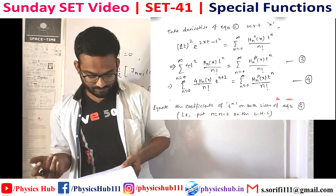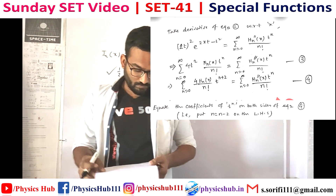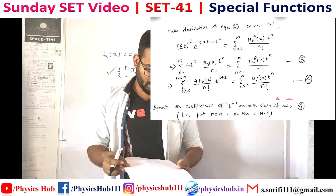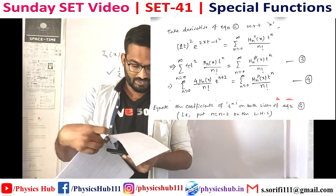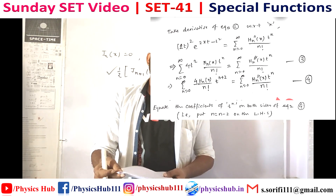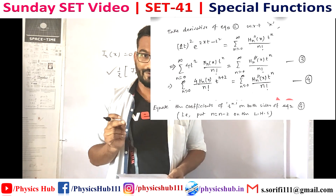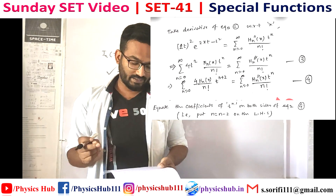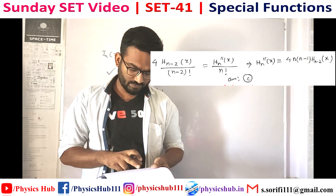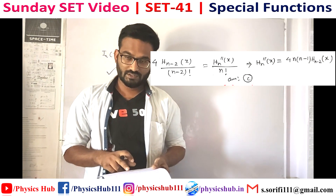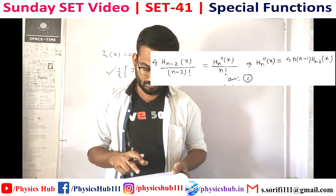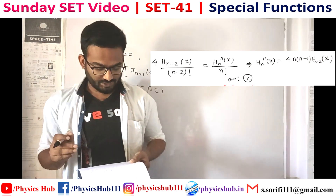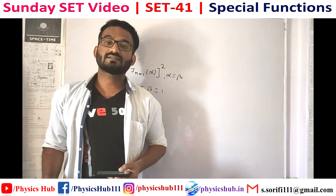Equating the coefficients of t^n on both sides, we substitute n = n − 2 on the left-hand side and get 4·Hn−2(x). Isolating Hn''(x) gives 4(n−1)·Hn−2(x). This matches option C, so option C is the correct answer for the second question.